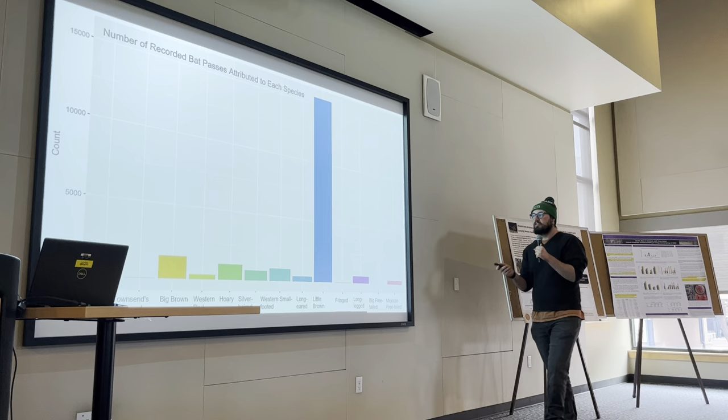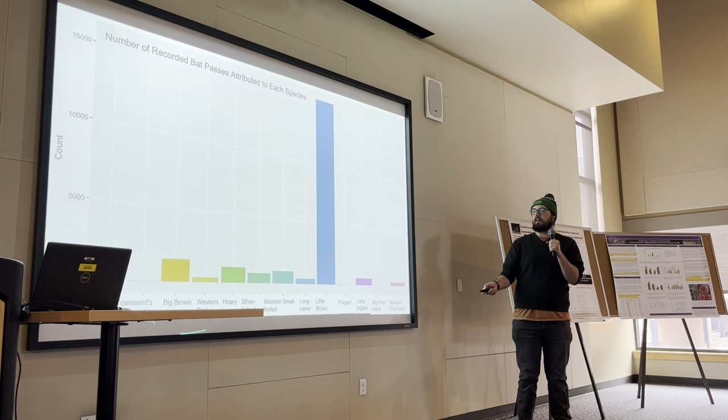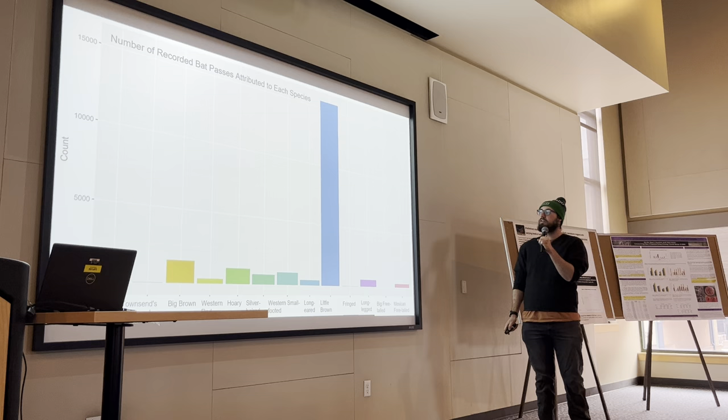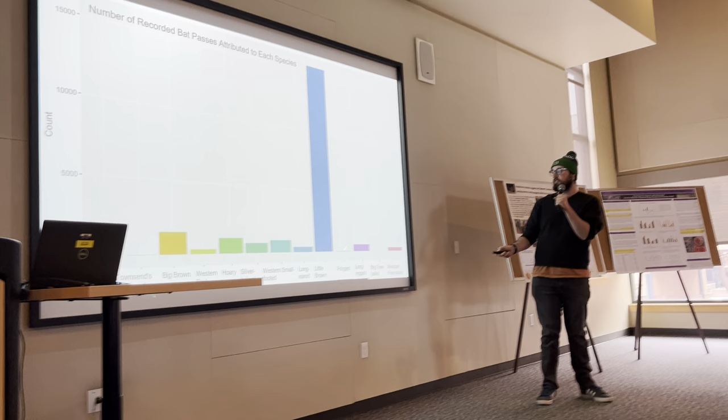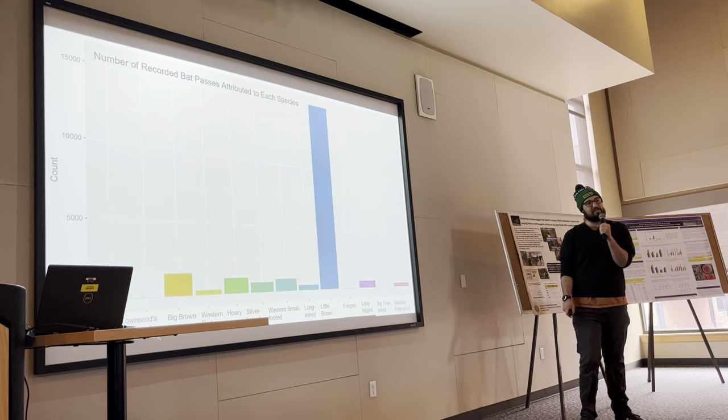Looking at the calls we identified, on the x-axis are each individual species and on the y-axis the count of passes attributed to each. The little brown bat by far dominated the system — over 15,000 calls were attributed to that species alone. The two species without significant p-values, Townsend's big-eared bat and fringed myotis, had very few occurrences, and the big free-tailed bat was also very low. For those reasons, those three species were left off in further analysis.